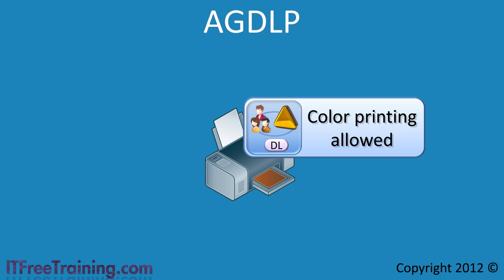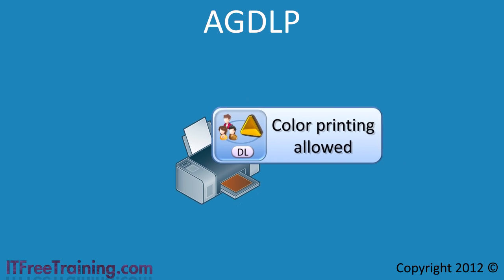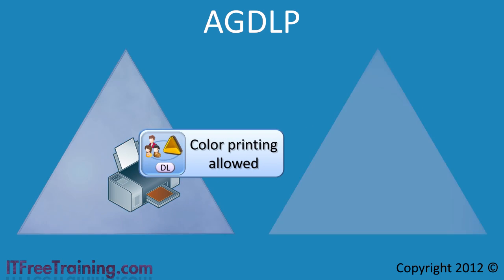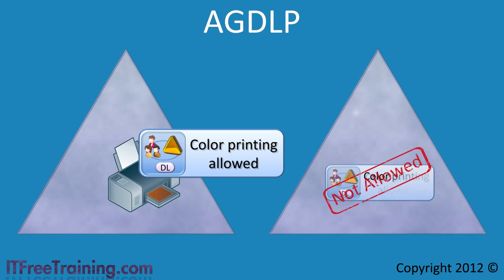The advantage of using a domain local group for permissions like this is that you can be assured that the group will not be used in another domain. If your company decides to audit who has access to what, you can look inside the color printing allowed group to determine who is able to print to the color printers in your domain. If the group was available for use in another domain by other administrators, you would not know what resources this group was used on and even if the group was used at all.